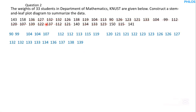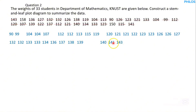For the 140s: we have 140, 141, and 143 — mark and write them down. For the 150s: we have 150 and 158 — mark and write them down. Everything in the data set should now be marked.